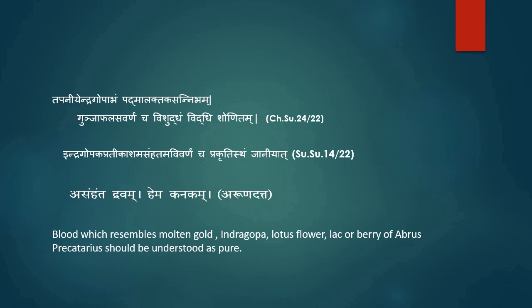Blood which resembles molten gold, indragopha, lotus flower, lac or berry of Everest precarius should be understood as pure. It is neither too thick nor too thin — due to this property, blood does not clot in the intravascular compartment. Acharya Arundhat, commenting on asahatam, mentioned it as dravya. Avivandhat means that pure blood does not stain the cloth, while impure blood stains the cloth in such a way that it does not come clean.